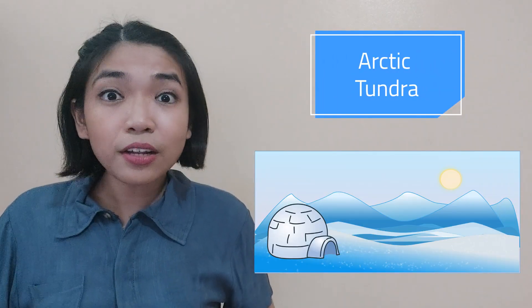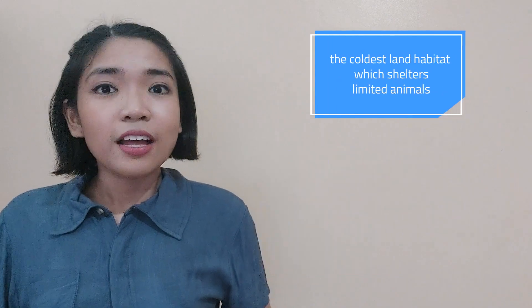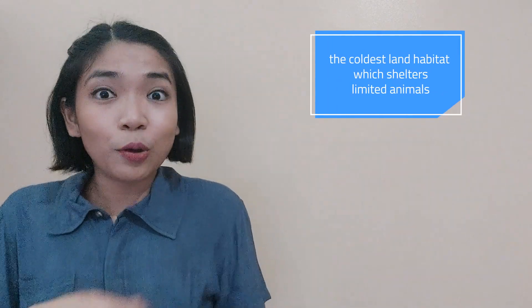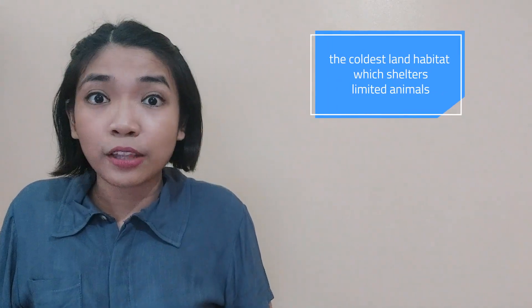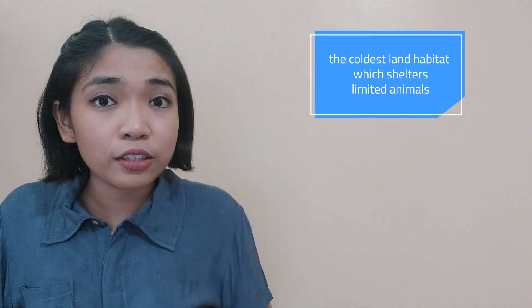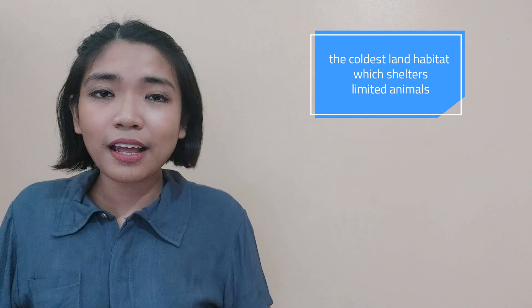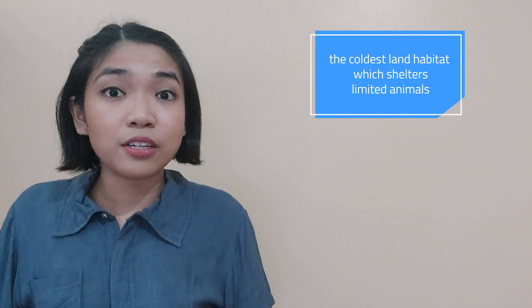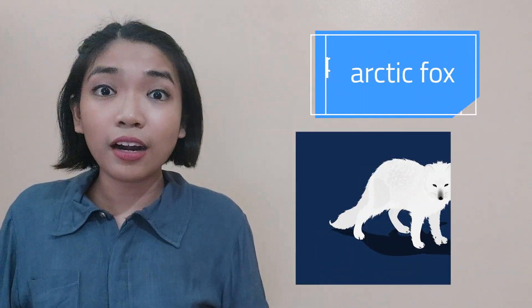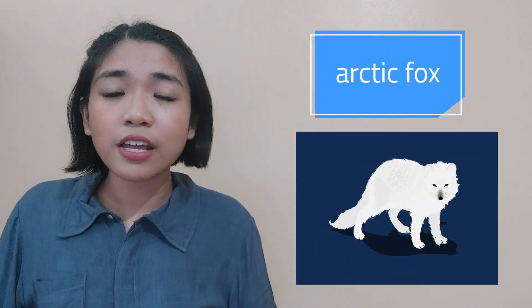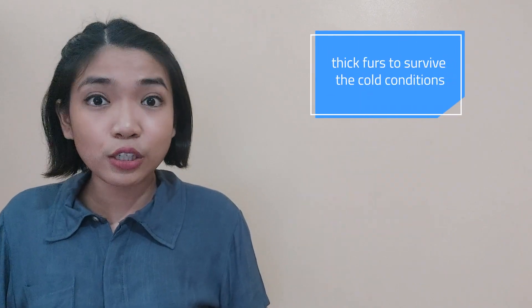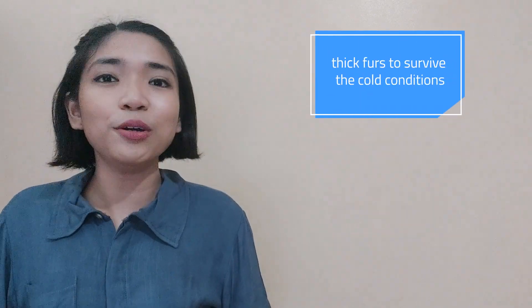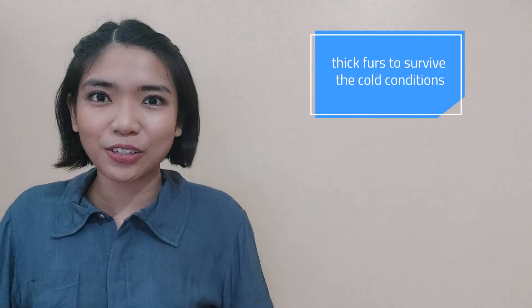Arctic Tundra — this is the coldest land habitat, which shelters limited animals such as polar bears, arctic fox, and gray wolves that have thick furs to survive the cold conditions.